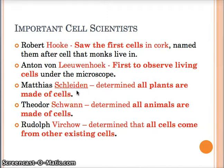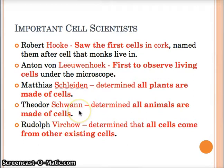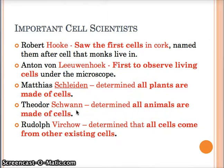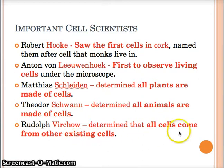Next we've got Schleiden. This guy figured out that all plants are made of cells. Then you've got Schwann, who figured out all animals are made of cells. The way I remember that one is that a swan is an animal and his name is Schwann - just a dumb memory trick. And then the last guy is Virchow, and he figured out that cells don't just pop up out of nowhere - that they come from something that's already existing. So for Virchow, write: all cells come from already existing cells.